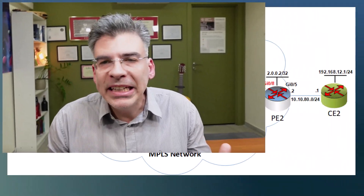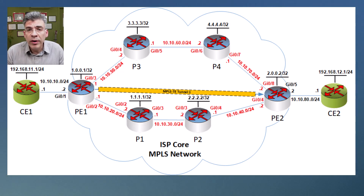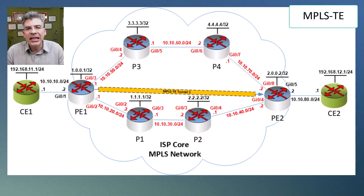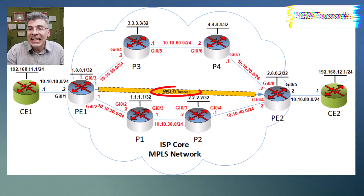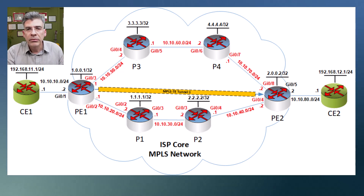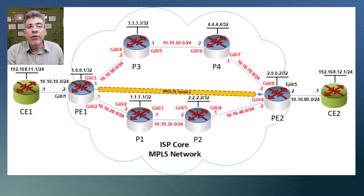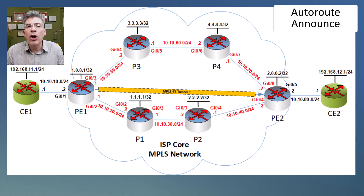We've been looking at MPLS traffic engineering, and we've established TE tunnels on an MPLS TE topology over the past few videos. This is the topology we've been working on, where we have configured MPLS TE with an OSPF underlay and RSVP TE. We've created an LSP tunnel from PE1, which is the head-end router, to PE2, which is the tail-end router. Our MPLS TE topology is now up and running with a single tunnel already established. We've been looking at various routing solutions for routing traffic over established TE tunnels, and we've already looked at static routing, as well as the autoroute announce and the autoroute destination features.